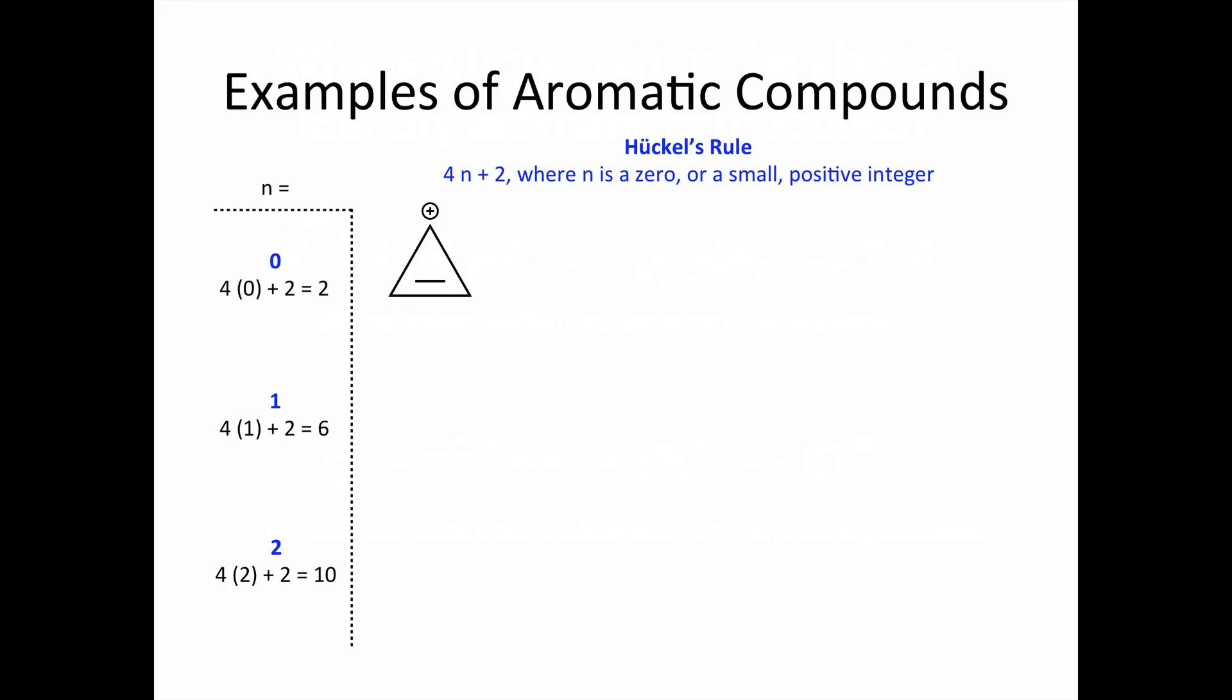Let's explore some more examples of aromatic compounds. When n equals 0, there are 2 electrons in the pi system, and an example is the cyclopropenyl cation. If n equals 1, there are 6 electrons in the pi system, and benzene and pyridine are examples.